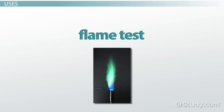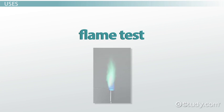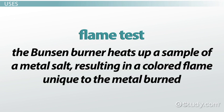The Bunsen burner is a crucial piece of equipment in one of the most classic chemistry experiments, the flame test. In this experiment, the Bunsen burner heats up a sample of a metal salt, resulting in a colored flame unique to the metal burned.